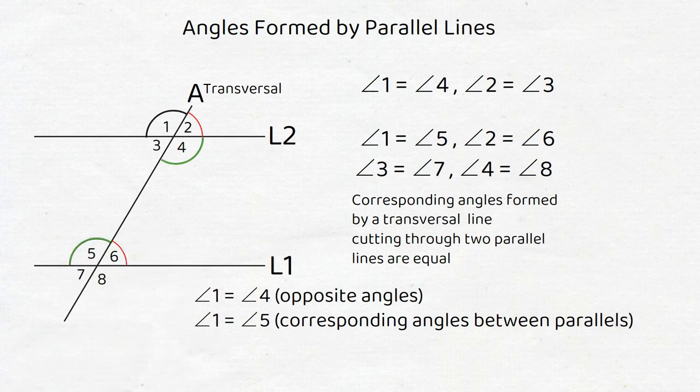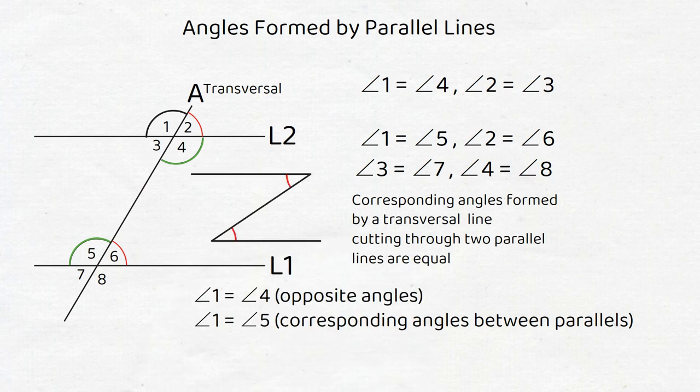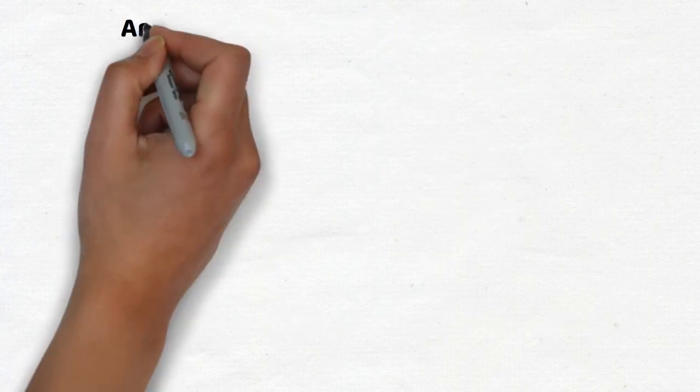In other words, the Z letter shaped segment has equal angles. These are also sometimes referred to as alternate interior angles, because they are on opposite sides of the transversal and inside the two parallel lines.